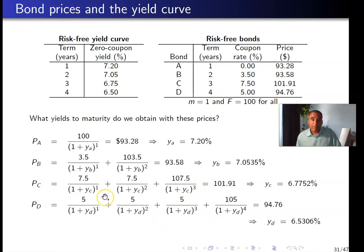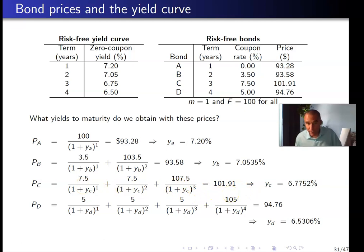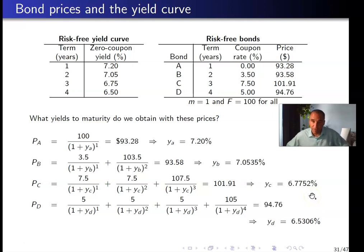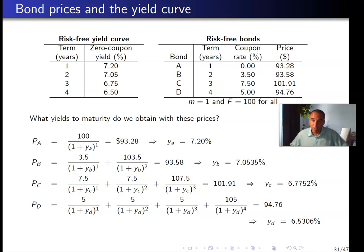For Bond C, if we use the same rate to discount all future cash flows and require that this rate produces the same price as obtained with the yield curve, the yield to maturity consistent with the yield curve price is 6.7752%. This means a bond trader buying Bond C and holding it for the full three years will realize an annual return of 6.7752%.